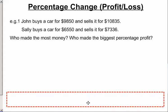So let's look at them one at a time. John, the money that he made, the profit that he made was $10,835 minus what he spent, $9,850. That's what he sold it for minus what he spent. So that's the profit he makes, and that gives us a profit of $985.